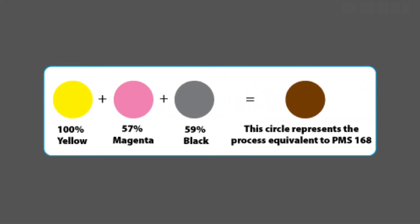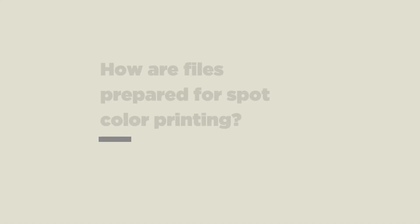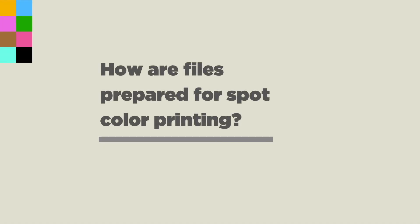Some spot colors can also be an economic choice for projects where you can only print three or fewer colors and won't be reproducing full color photographs. For example, to print a specific color using process colors, you'd need varying amounts of yellow, magenta, and black — mixing three colors for just one result. But using a spot color means just one printing ink, which may be more economical and efficient in the long run.